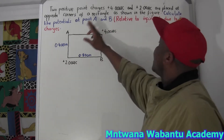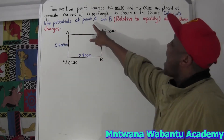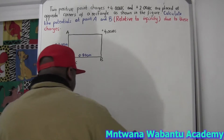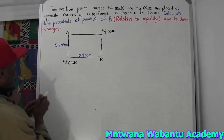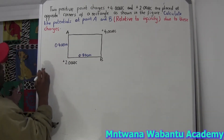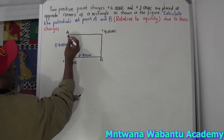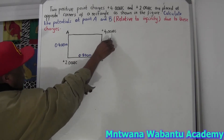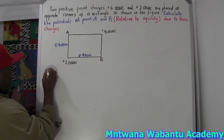We are calculating the potential at point A. We know how to calculate the potential. If you look at point A, it has two potentials contributing to it — from A to the first charge and from A to the second charge. We know the formula to calculate the potential.